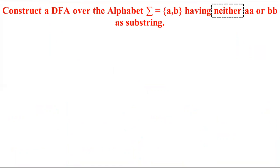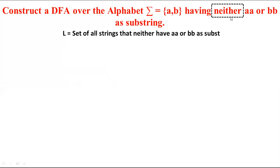The word 'neither' means that 'aa' or 'bb' should never appear side by side. If the question had said 'either aa or bb', then the string could have 'aa' or 'bb' as substrings. But in this case, since we have 'neither', our language L will be equal to the set of all strings that neither have 'aa' nor 'bb' as substrings.